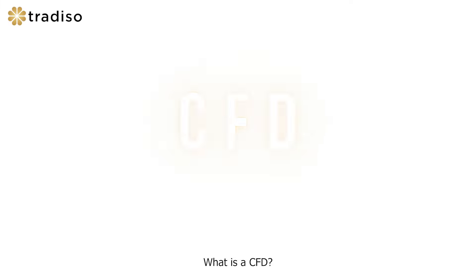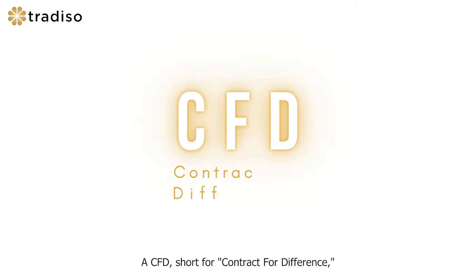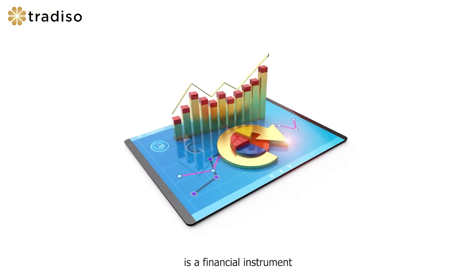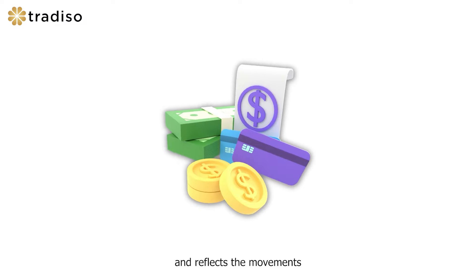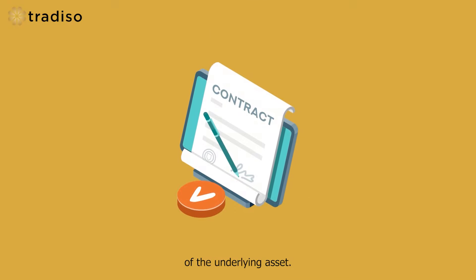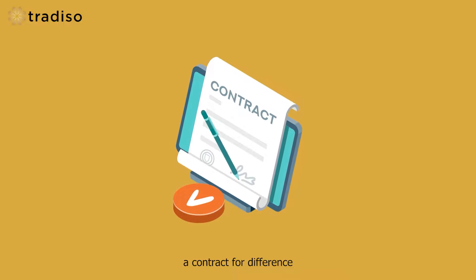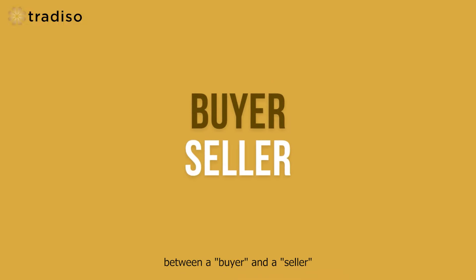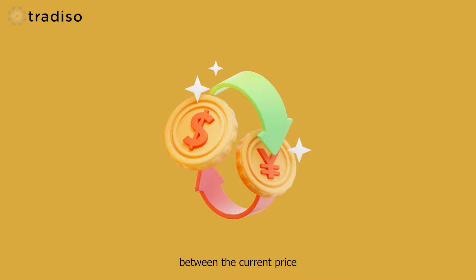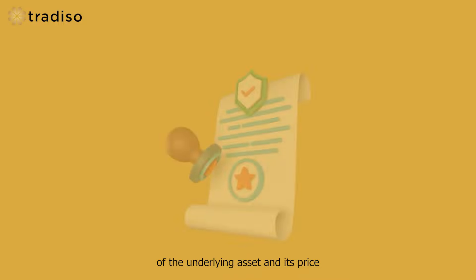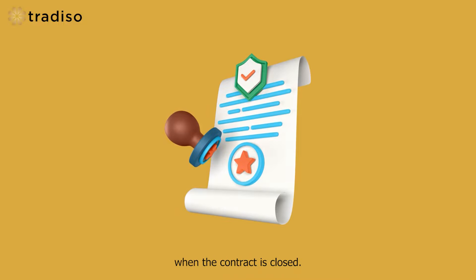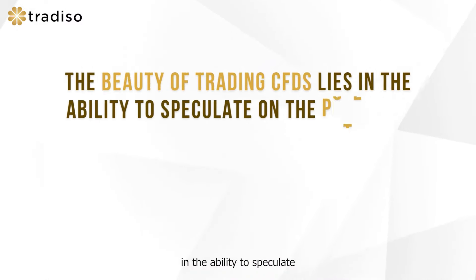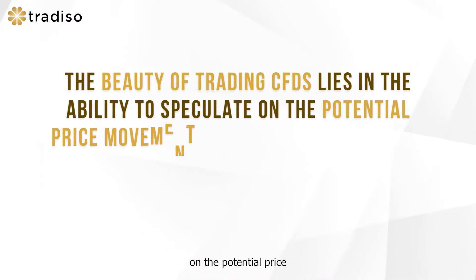A CFD, short for contract for difference, is a financial instrument that can be traded and reflects the movements of the underlying asset. In essence, a contract for difference is an agreement between a buyer and a seller to exchange the difference between the current price of the underlying asset and its price when the contract is closed.